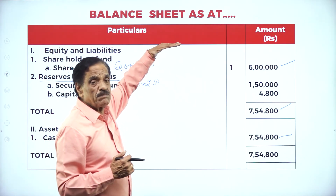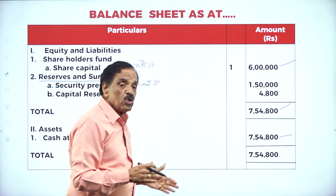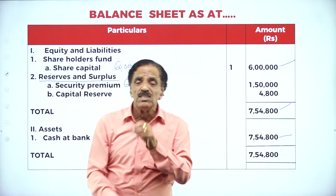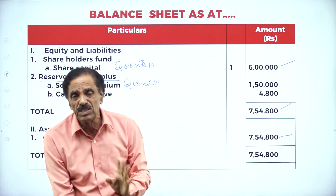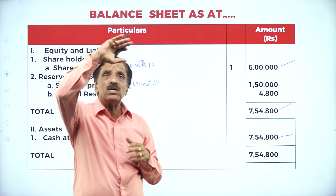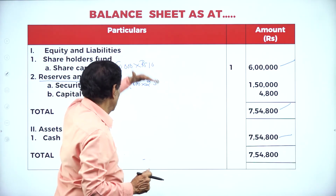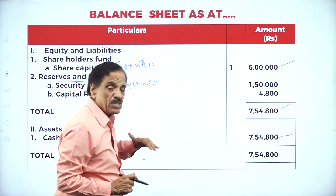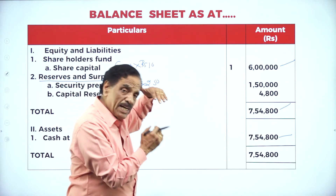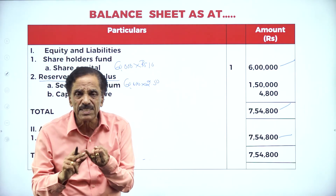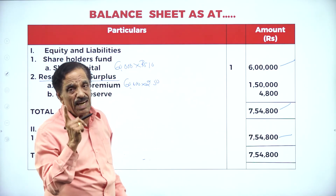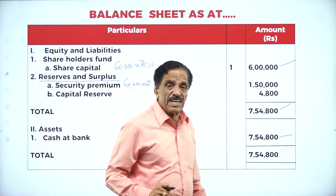Source will come on the liabilities side; application will come on the assets side — no horizontal format. If you do horizontal, you won't get marks in the examination. They will ask vertical column balance sheet 99.9% of the time. Vertical column balance sheet: source and application. Source contains equity and reserve and surplus; application contains fixed assets and current assets — and they must tally.